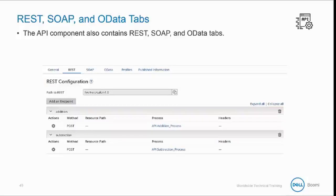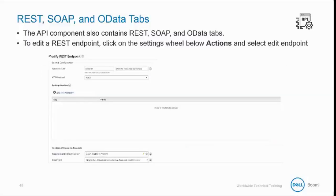Imported endpoints are visible in the REST tab. To edit an endpoint, click the Settings wheel below Actions and then select Edit Endpoint. You will see General Settings, the process — which process will be kicked off and pass input data to — the object, the URL path where you can specify a specific path, after addition which will redirect to a different listener, the HTTP method, the input type and output type, and the request and response profile.